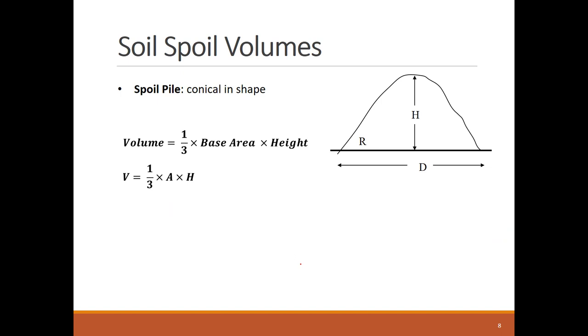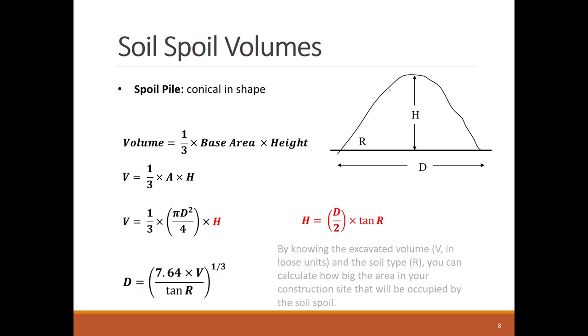By going back to the volume formula, V equals one third times the area times the height. The base area is circular with a value of π d squared over 4. The height can now be related to d using the angle of repose and the triangle formed by d over 2 and H. By substituting H's formula into the V volume, you can calculate the diameter of the soil spoil pile by using the excavated volume V in loose units and the angle of repose.